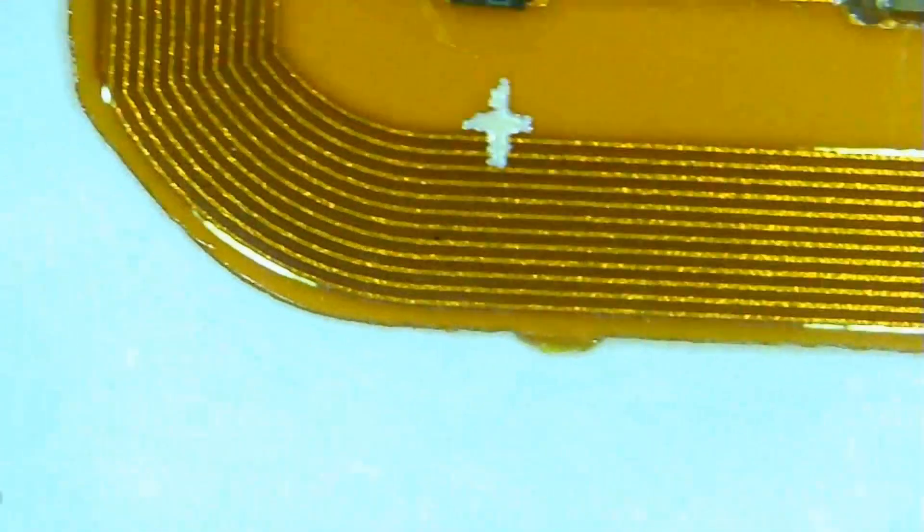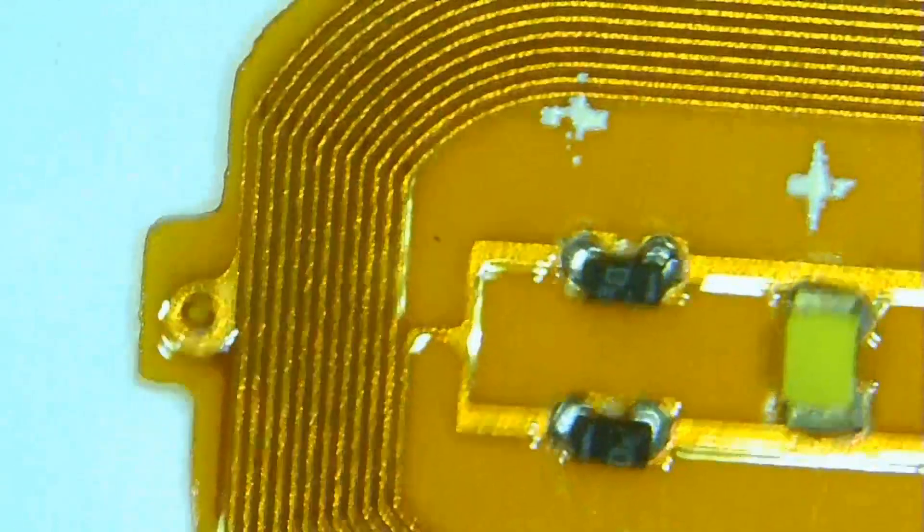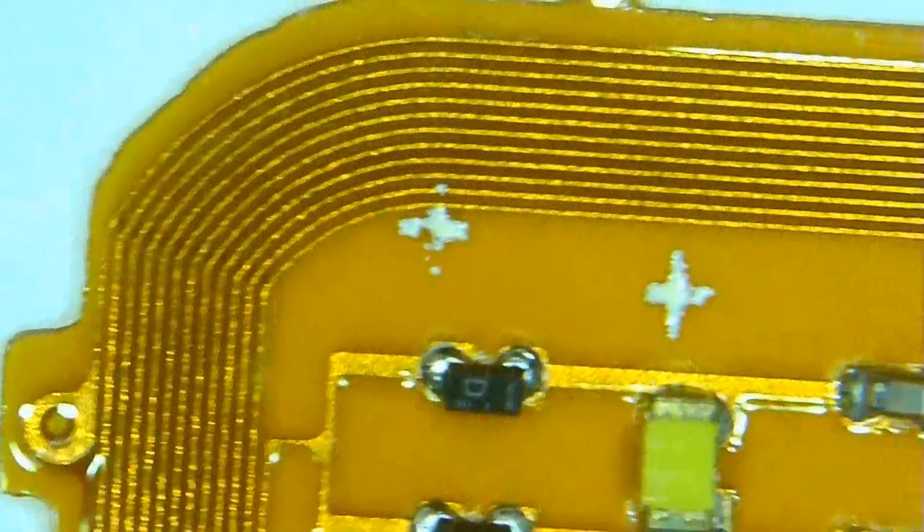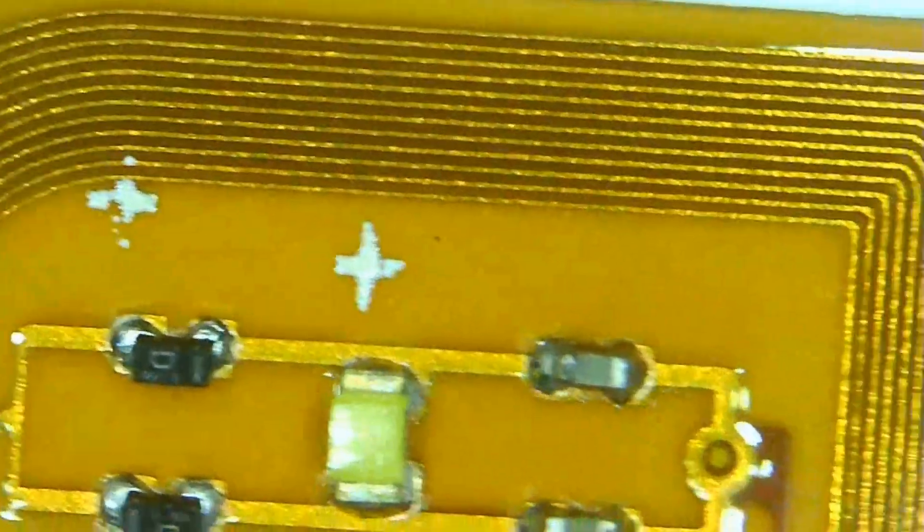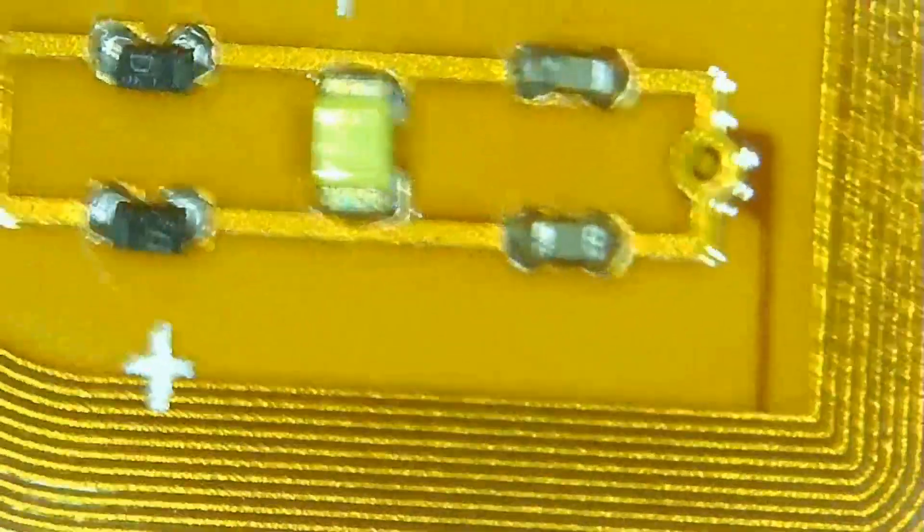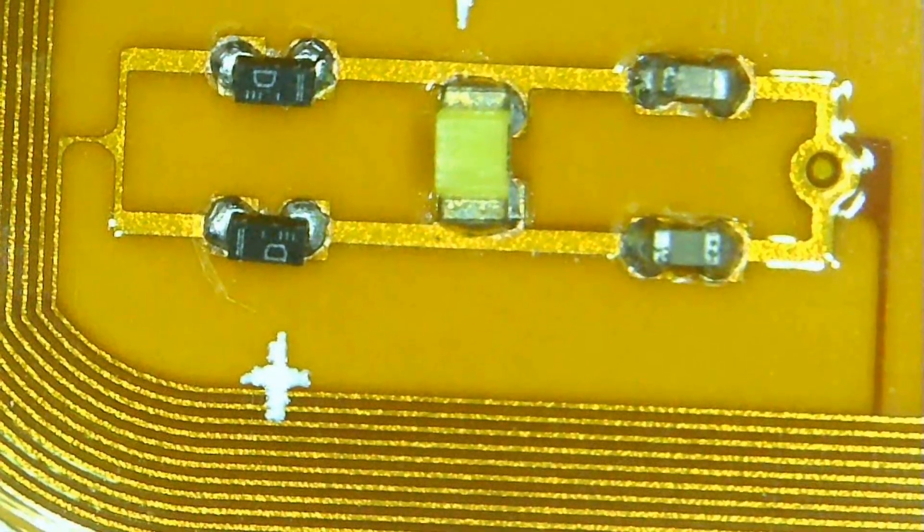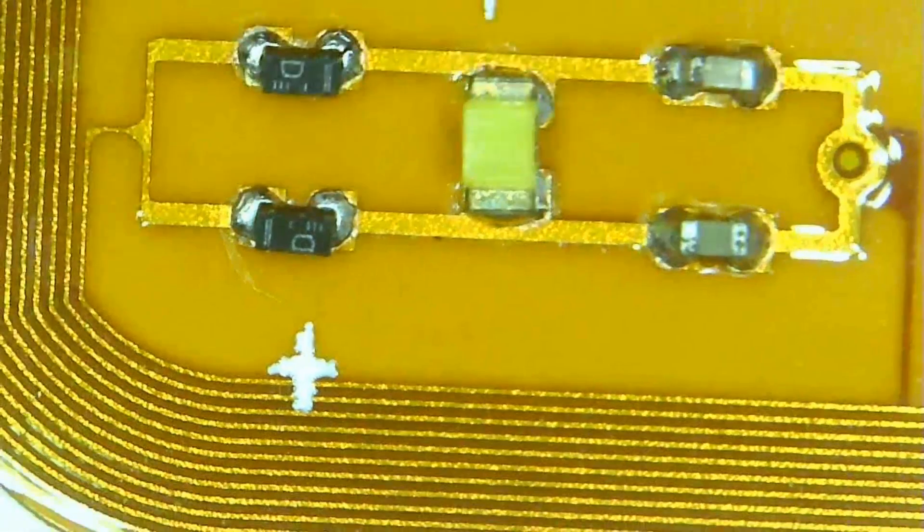I'm using my USB microscope to have a close-up look at it. We can see the coil printed. What have we got? 1, 2, 3, 4, 5, 6, 7, 8, 9, 10, 11, 12 coils.